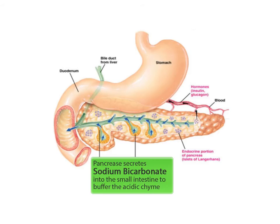Enzymes in the small intestine function optimally at a pH of about 8.5, so the acidic chyme entering the small intestine must be buffered. The pancreas secretes a buffer called sodium bicarbonate into the small intestine to buffer the acidic chyme from a pH of about 2 to a pH of around 8.5.